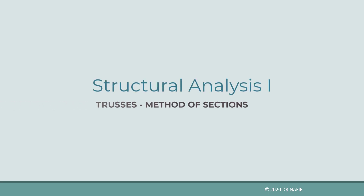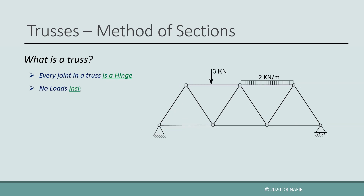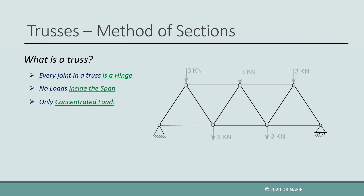Today we will show how to evaluate internal forces in trusses using the method of sections. As a revision, let us explain what a truss is. In a truss, every joint in the structure is a hinge and no loads should exist in the spans between the joints. Concentrated loads are allowed only at the locations of the joints. When the above conditions are fulfilled, the structure will qualify as a truss.